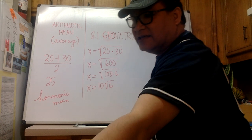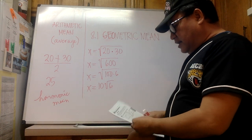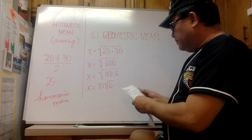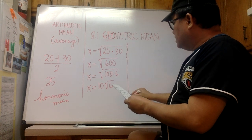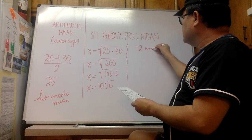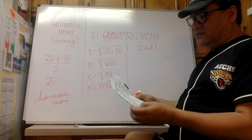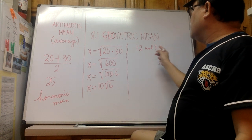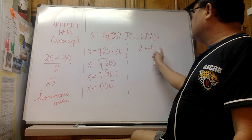Easy, right? Let's take a look at example letter A in your packet. In example letter A you were given 12 and 3. Those are the two numbers given to you in example A, and your job is to find the geometric mean between 12 and 3.